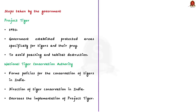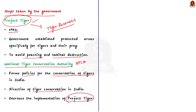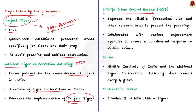Let us see some efforts taken by the Indian government to conserve tigers. The first major step was Project Tiger, launched in 1973. It was one of the earliest and most significant efforts to conserve tigers in the world. Through Project Tiger, the government established protected areas like tiger reserves. The project also aimed to stop poaching and habitat destruction. The second important body is the National Tiger Conservation Authority (NTCA), which is responsible for formulating policies, plans, and programs for the conservation of tigers in India. It sets the direction for tiger conservation efforts across the country and also oversees the implementation of Project Tiger.